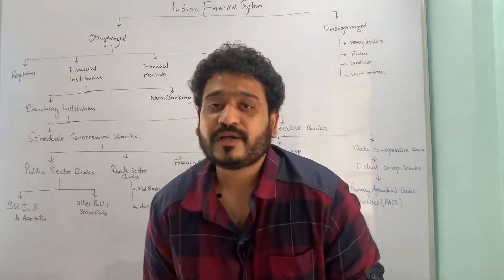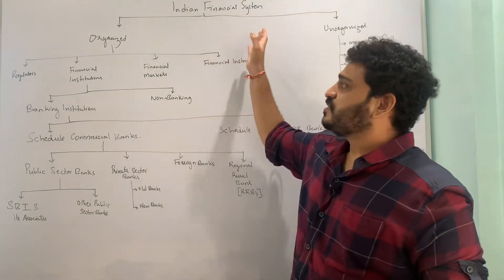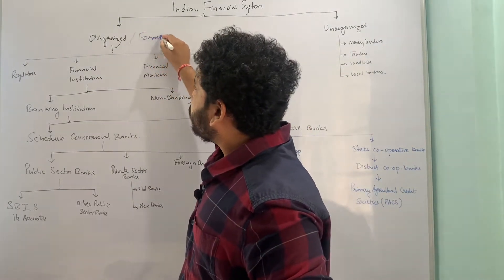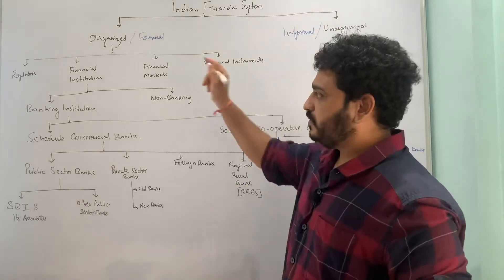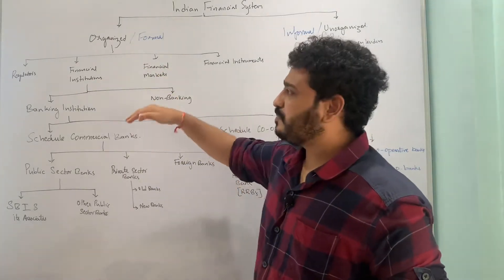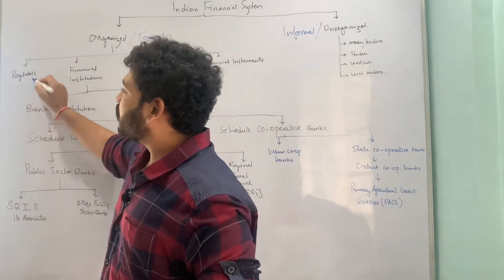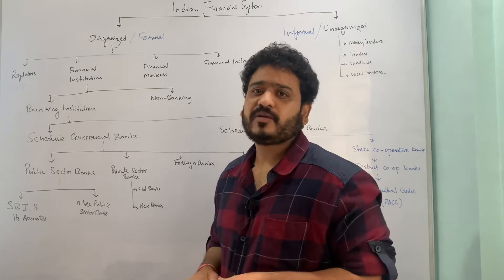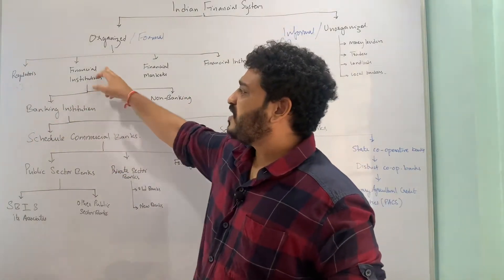Hello and welcome to the lecture series on monetary economics. In the previous lecture we have seen the superficial view of the Indian financial system and its structure. It was organized or formal and unorganized or informal at the two ends. Then we moved to look at how the organized sector can be further sub-classified, starting with regulators like the Reserve Bank of India, the Securities and Exchange Board of India, the Ministry of Finance, and the Insurance Regulatory and Development Authority of India.